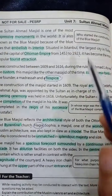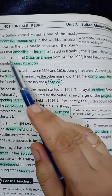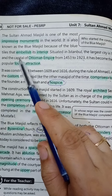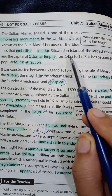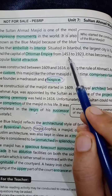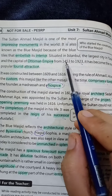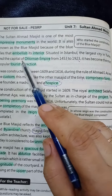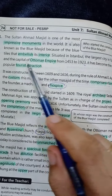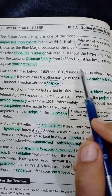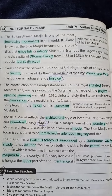Situated in Istanbul — استنبول میں واقع — the largest city in Turkey — جو ترکی کا سب سے بڑا شہر ہے — and the capital of Ottoman Empire — اور سلطنت عثمانیہ کا دارالحکومت — 1453 سے 1923 تک۔ It has become the most popular tourist attraction — یہ بن چکی ہے سب سے مقبول سیاحوں کی توجہ کا مرکز۔ یہ سب سے مقبول سیاحوں کی توجہ کا مرکز بن چکی ہے۔ Hope the translation of the first paragraph is very clear to you.